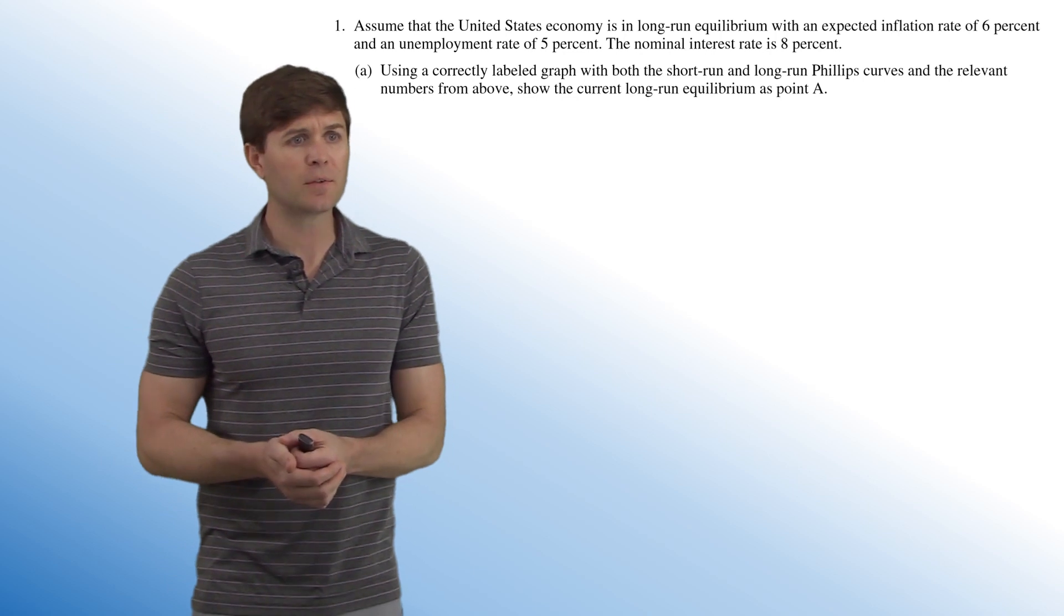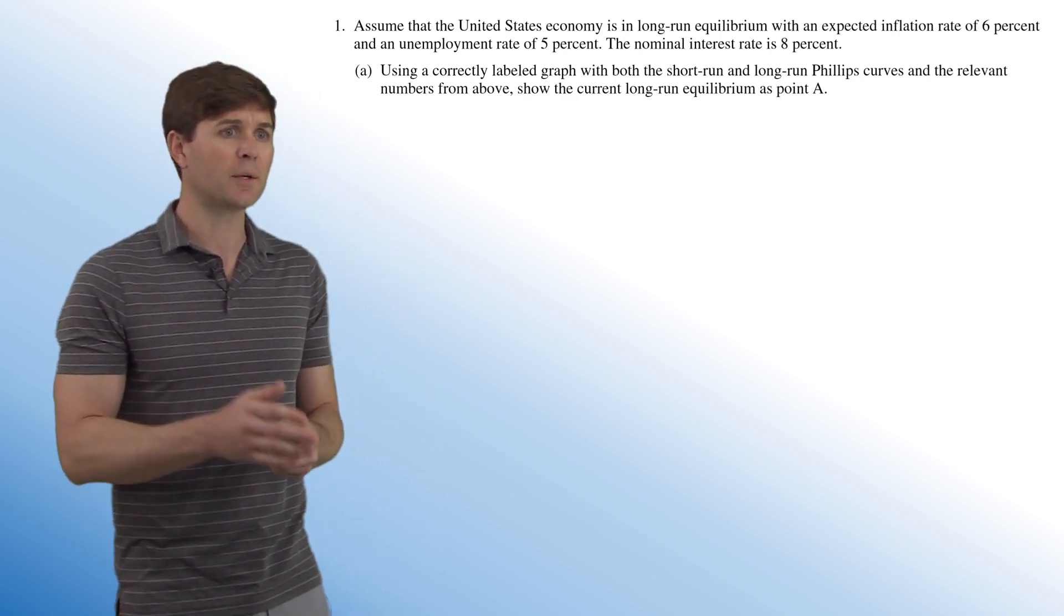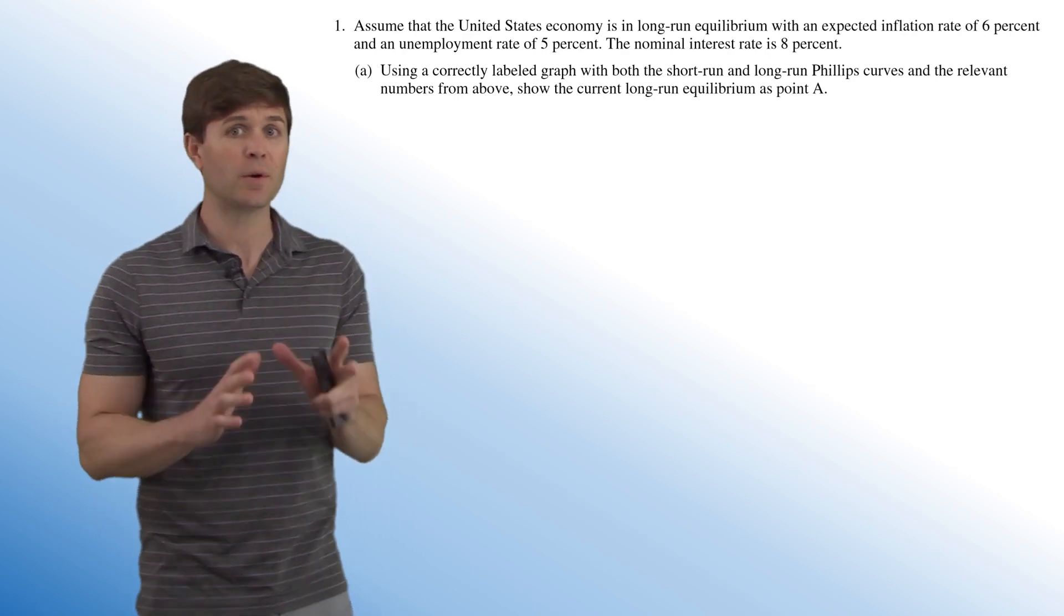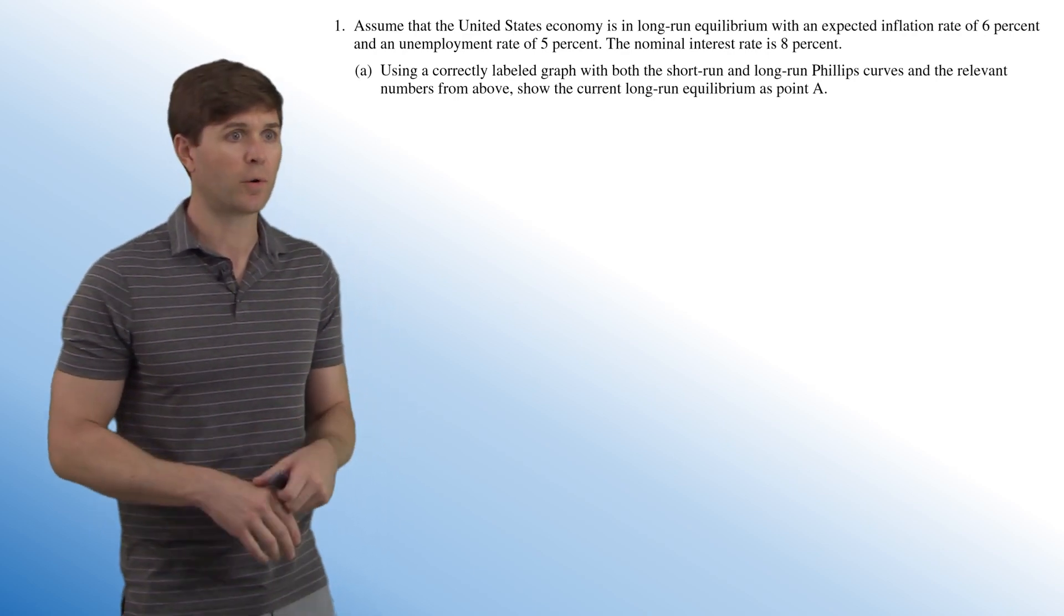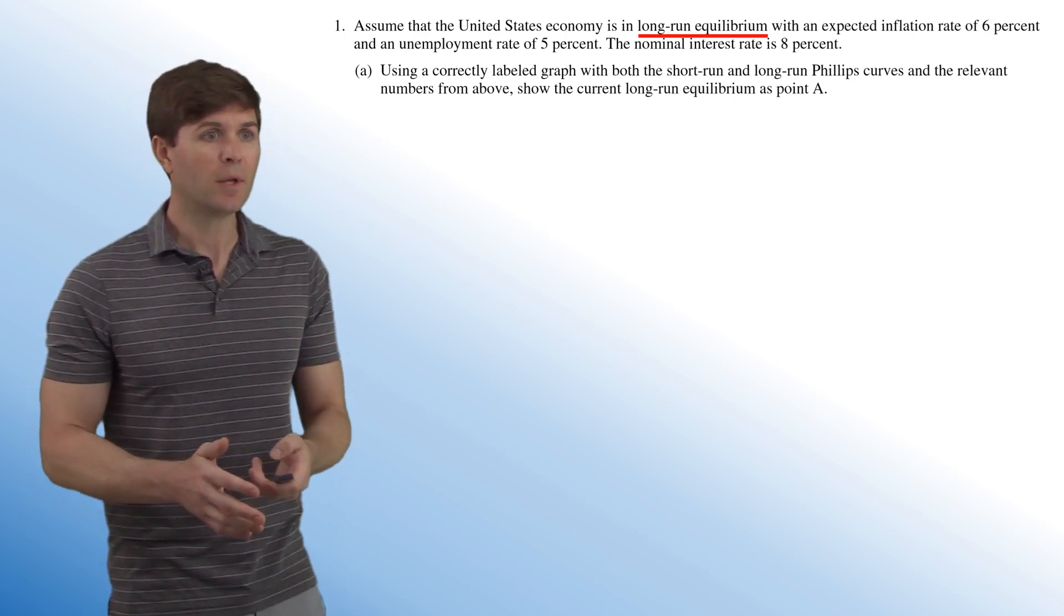Alright, so assume that the U.S. economy is in long-run equilibrium with an expected inflation rate of 6% and an unemployment rate of 5%. The nominal interest rate is 8%. So that's very important information and a good starting point for us. We're in long-run equilibrium, that means we're at full employment.